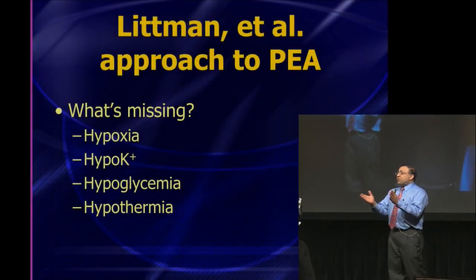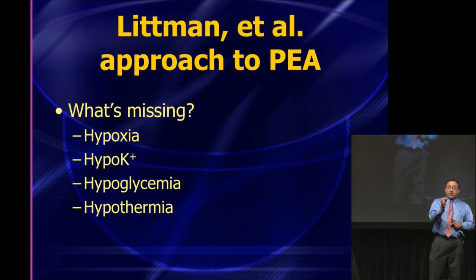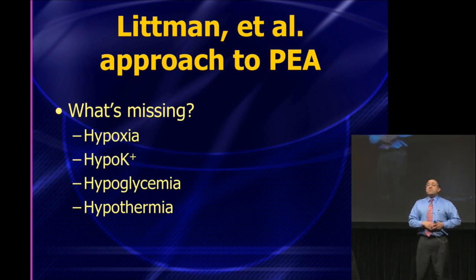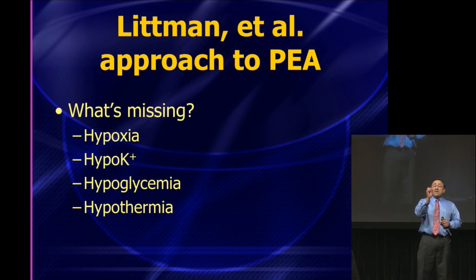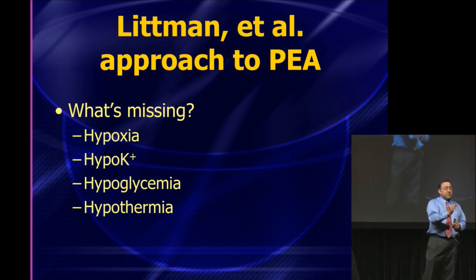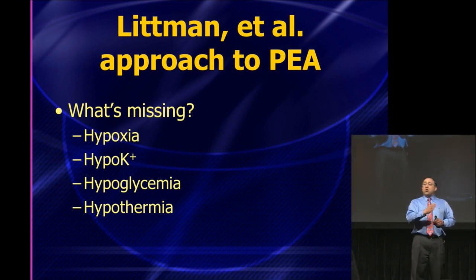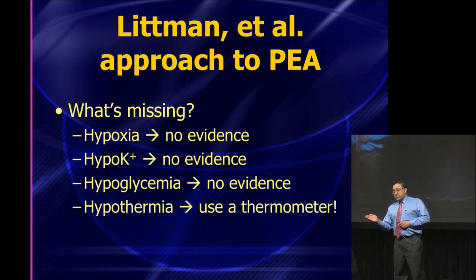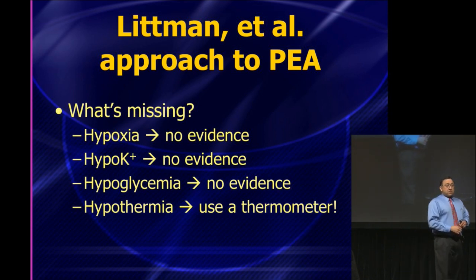What else? Beta blockers and calcium channel blockers can produce PEA. What's your clue? They produce narrow QRSs but with slow heart rates and AV blocks. So if you ever have a PEA patient with a narrow QRS that's slow, think beta blocker or calcium channel blocker. All other causes of PEA arrest with narrow QRSs will generally have rapid rates.